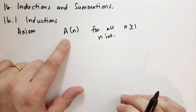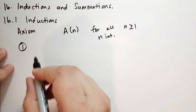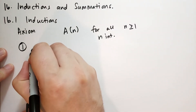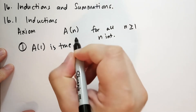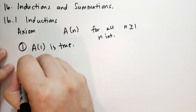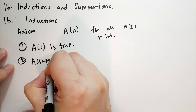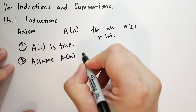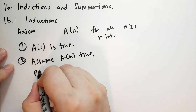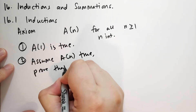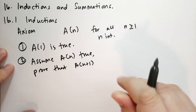In order to prove this assertion for all n, we only need to prove two things. Number one, we need to prove that A(1) is true. And then, if we assume A(n) is true, we must prove that A(n+1) is true.